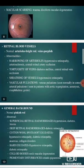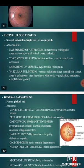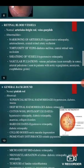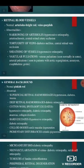Then the retinal blood vessels. Normally the arterioles are bright red and veins are purplish. Abnormalities include narrowing of arterioles in hypertensive retinopathy and arteriosclerosis, central retinal artery occlusion, and tortuosity of veins in diabetes mellitus and central retinal vein occlusion. There will be sheathing of vessels in hypertensive retinopathy, and vascular pulsations — venous pulsations seen normally in some, whereas arterial pulsations are seen in aortic regurgitation, aneurysm, and exophthalmic goiter.